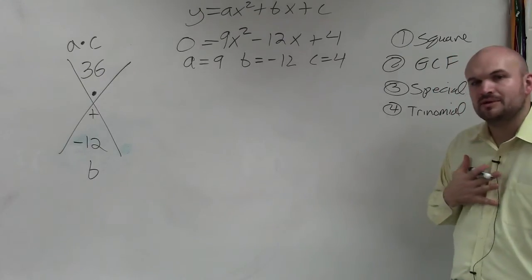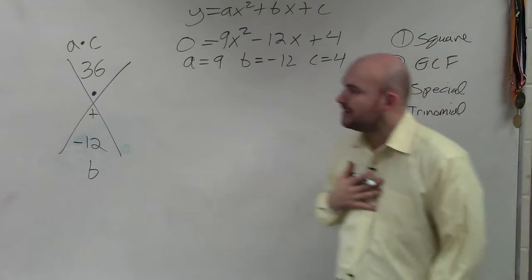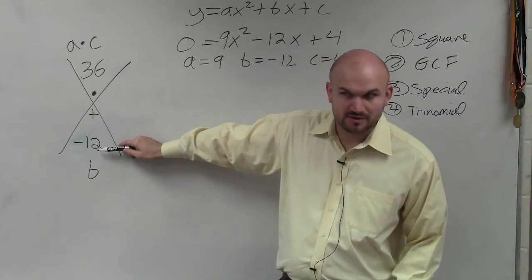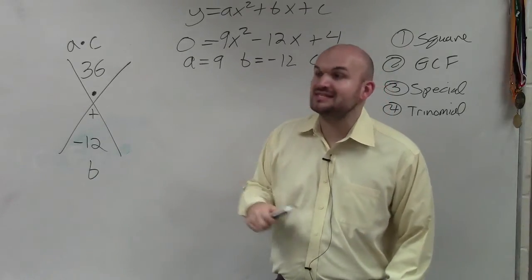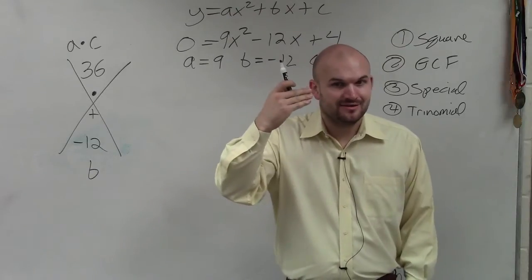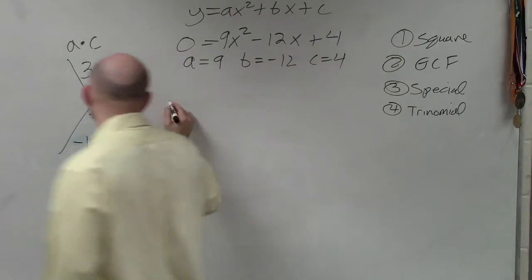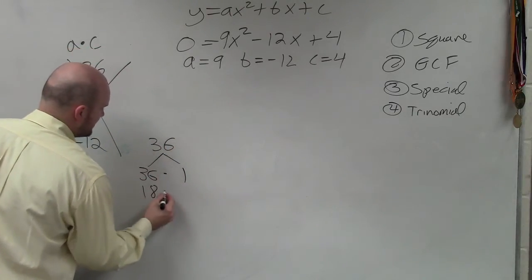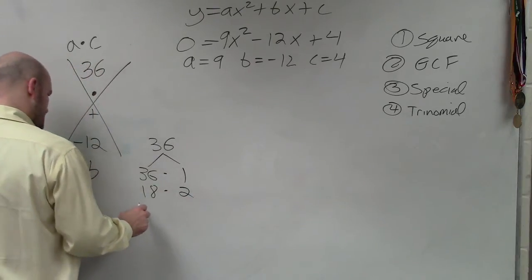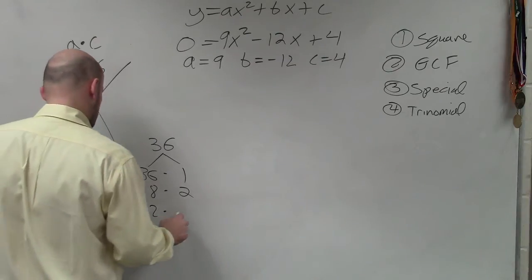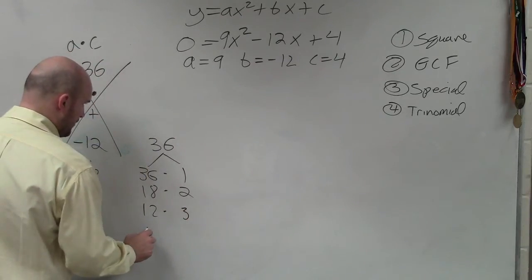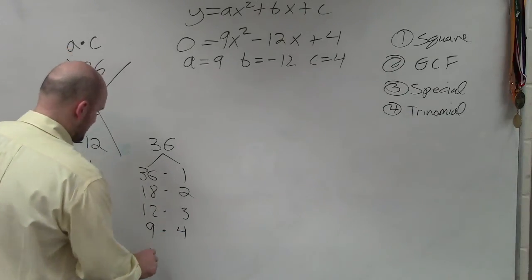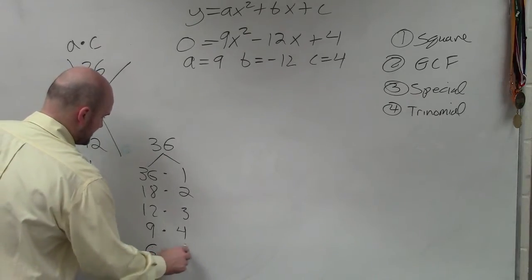So now, ladies and gentlemen, what we're going to do is now we need to identify what two numbers multiply to give us 36, but then add to give us negative 12. Before you give me the answer, let's list. You guys need to get these in your head. But if you're having trouble with that, let's just start listing all of them: 36 times 1, 18 times 2, 12 times 3, 9 times 4, 6 times 6, and that'd be it.